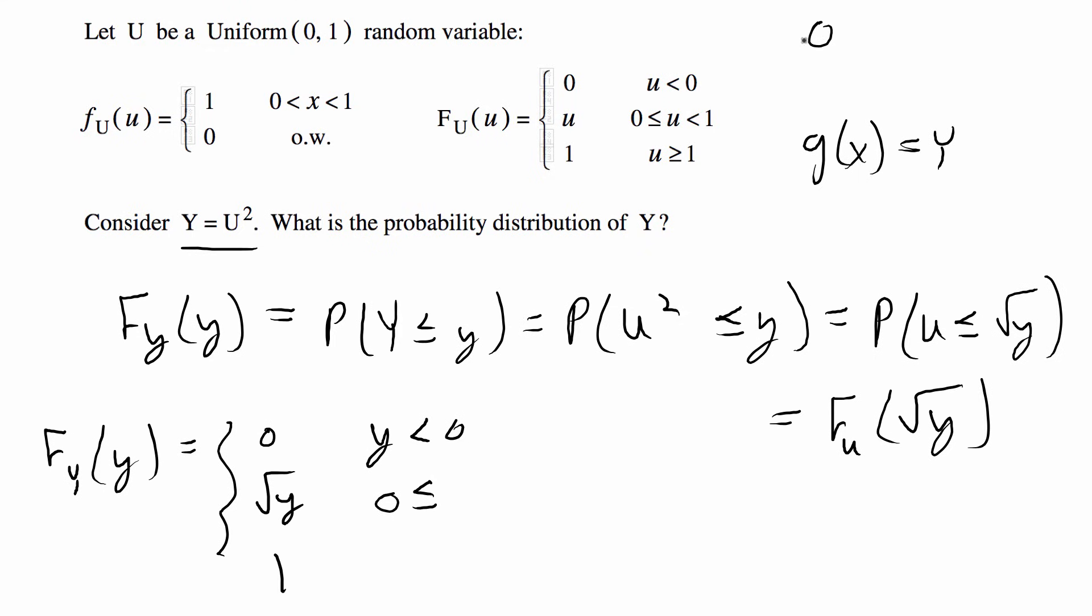So if we have 0 less than or equal to the square root of y less than 1, if we square that on both sides we're still going to get 0 less than or equal to y less than 1, and the same thing here. So now we officially have the CDF of Y.